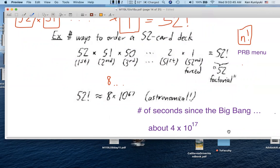About a 4 with 17 digits after it. This number here dwarfs this number over here. This is way bigger than this number over here.